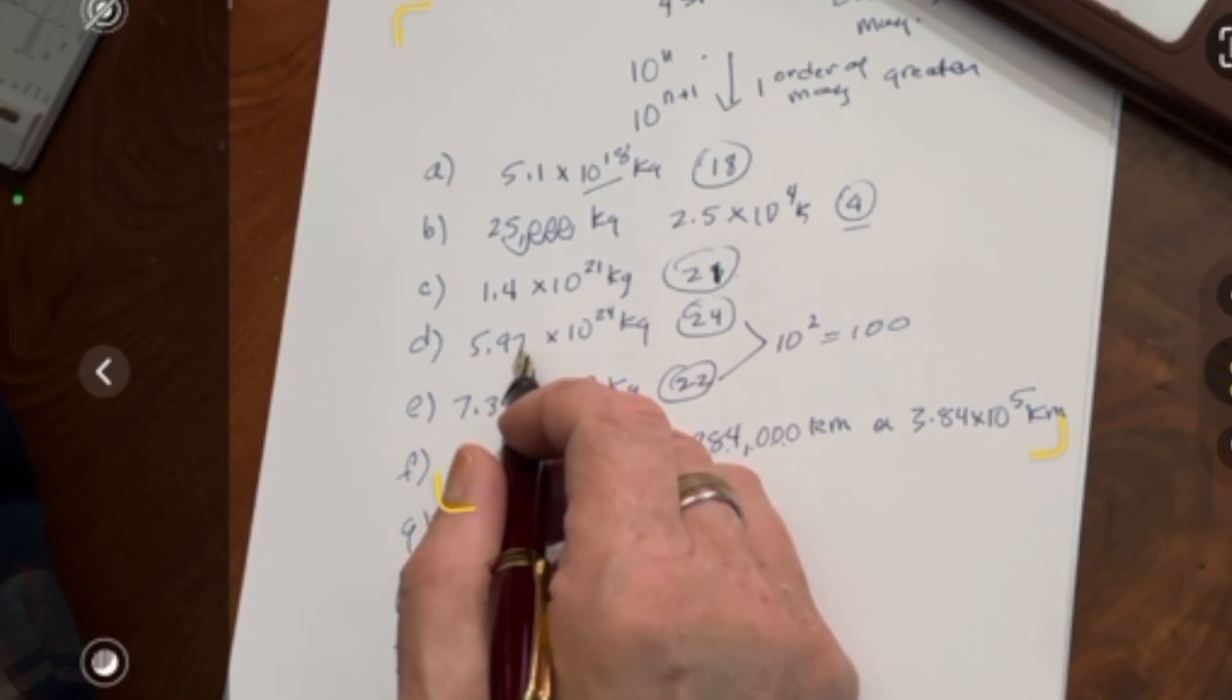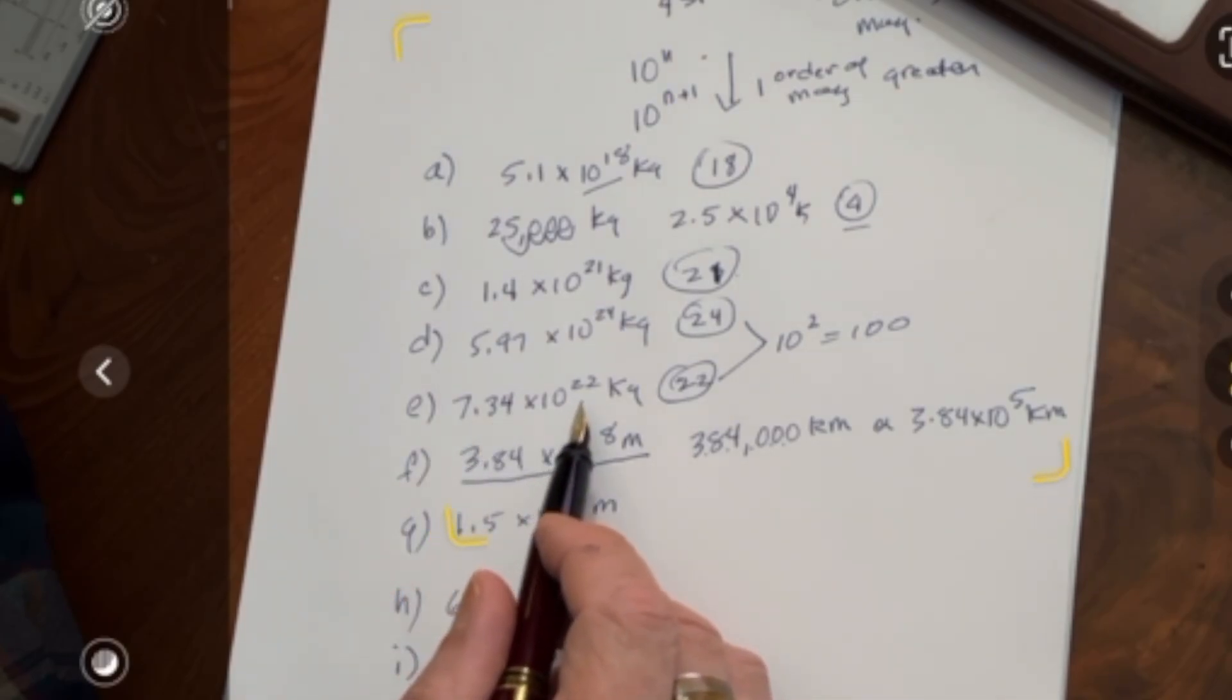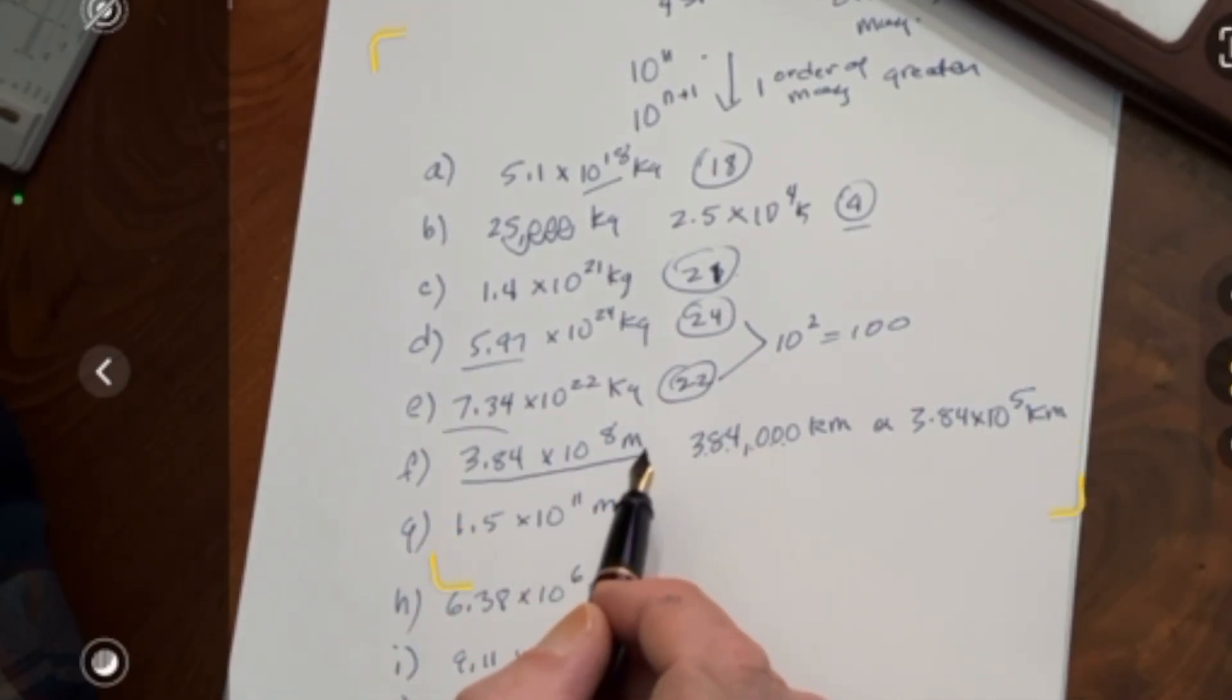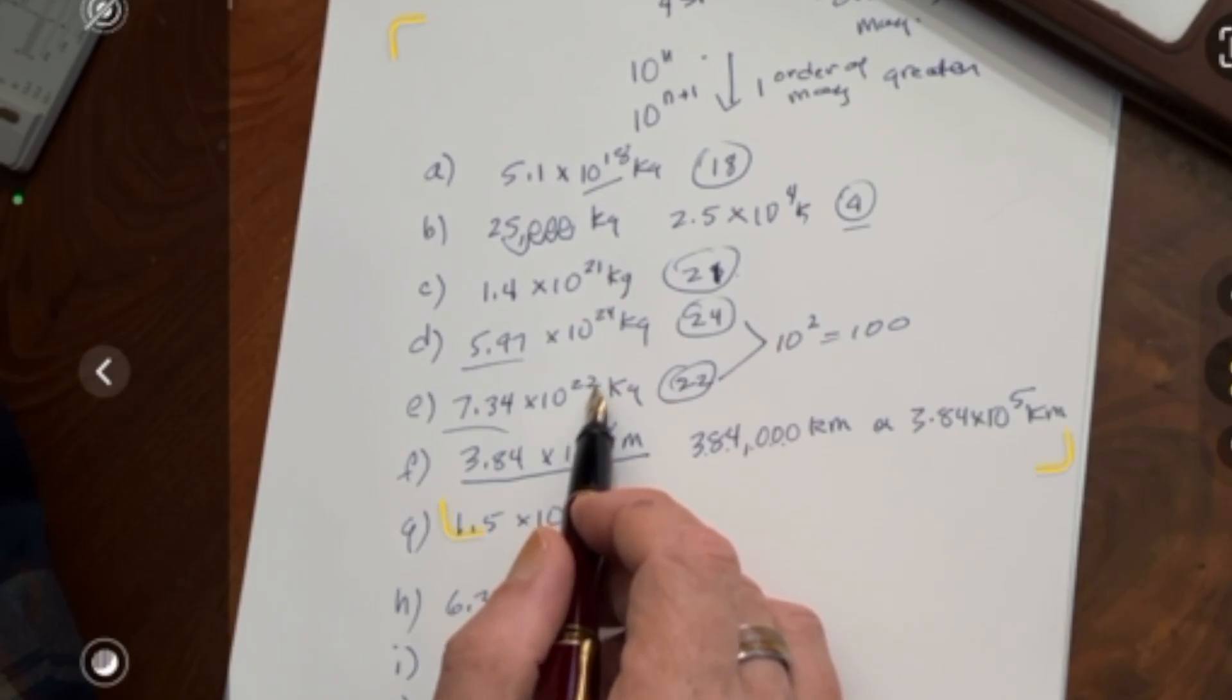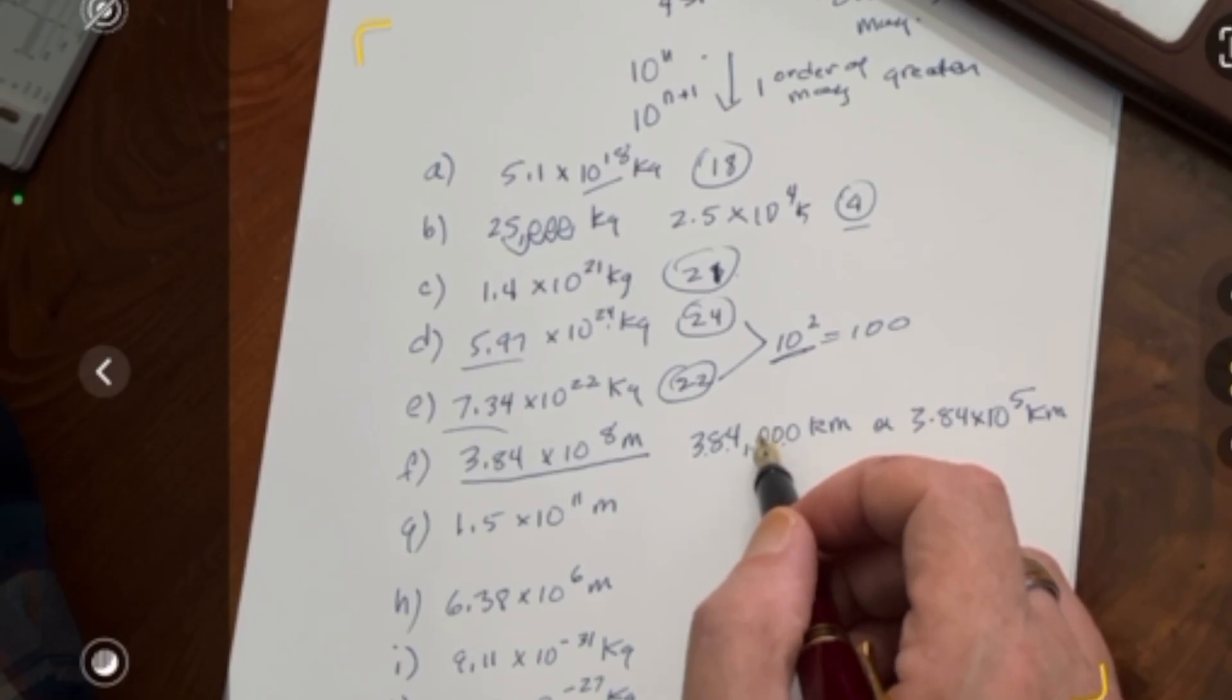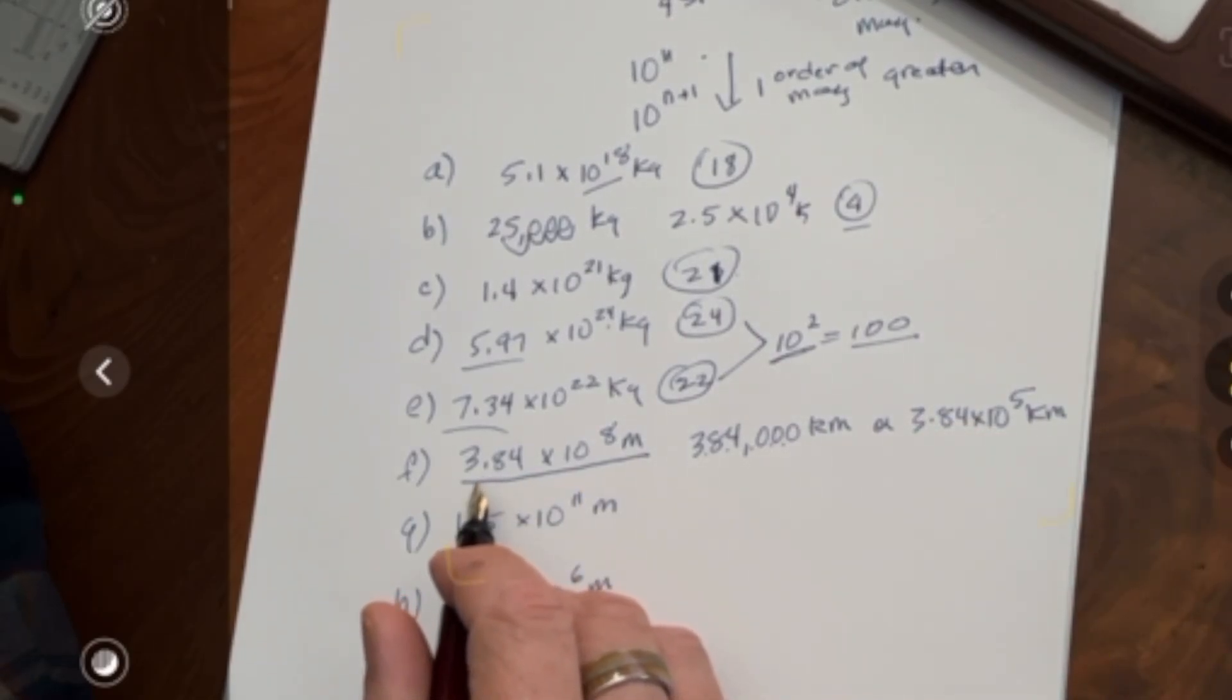D is the mass of the Earth itself, 5.97, almost 6, times 10 to the 24. Next, the mass of the Moon, 7.34 times 10 to the 22 kilograms. How much bigger is the Earth than the Moon? Notice that these numbers aren't all that far off, so let's just look at the difference in magnitude. Here we have 22, and here we have 24. The difference between them is a factor of two orders of magnitude, and that's about 100 times. So the Earth is about 100 times as massive as the Moon is.